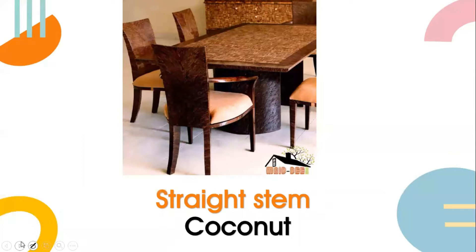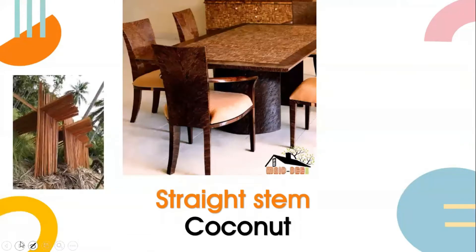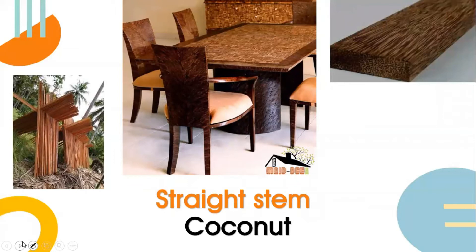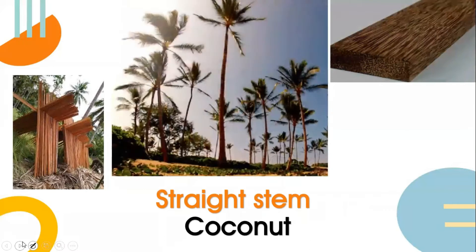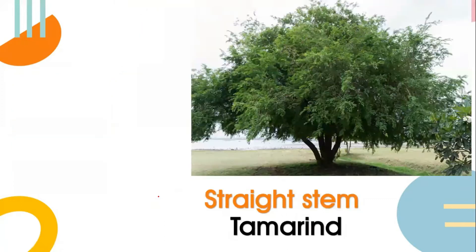We can make furniture from the wood of stems. We can get wood from the stem — for example, the coconut tree. The banana stem is a big part of this category. The banana stem is still a stretch stem.